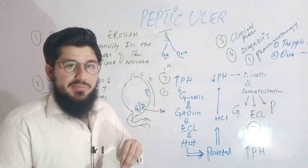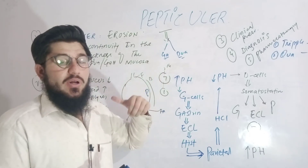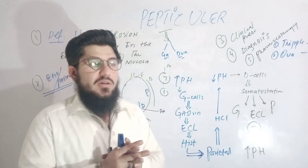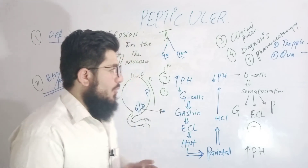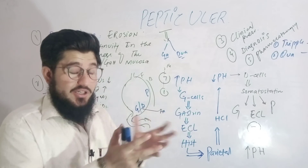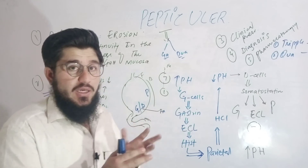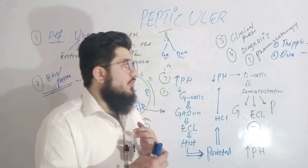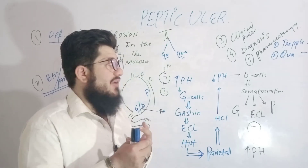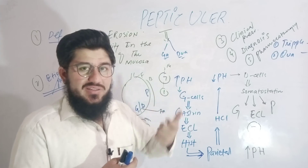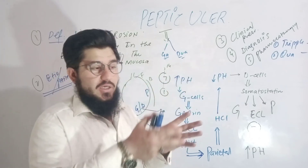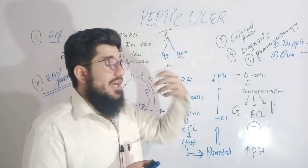For diagnosis, there are several methods available to identify H. pylori or peptic ulcer. The diagnostic tools include: endoscopy, which is the best method; serum antigen test; fecal antigen test; and the rapid urease test. These are the main methods used to diagnose peptic ulcer.